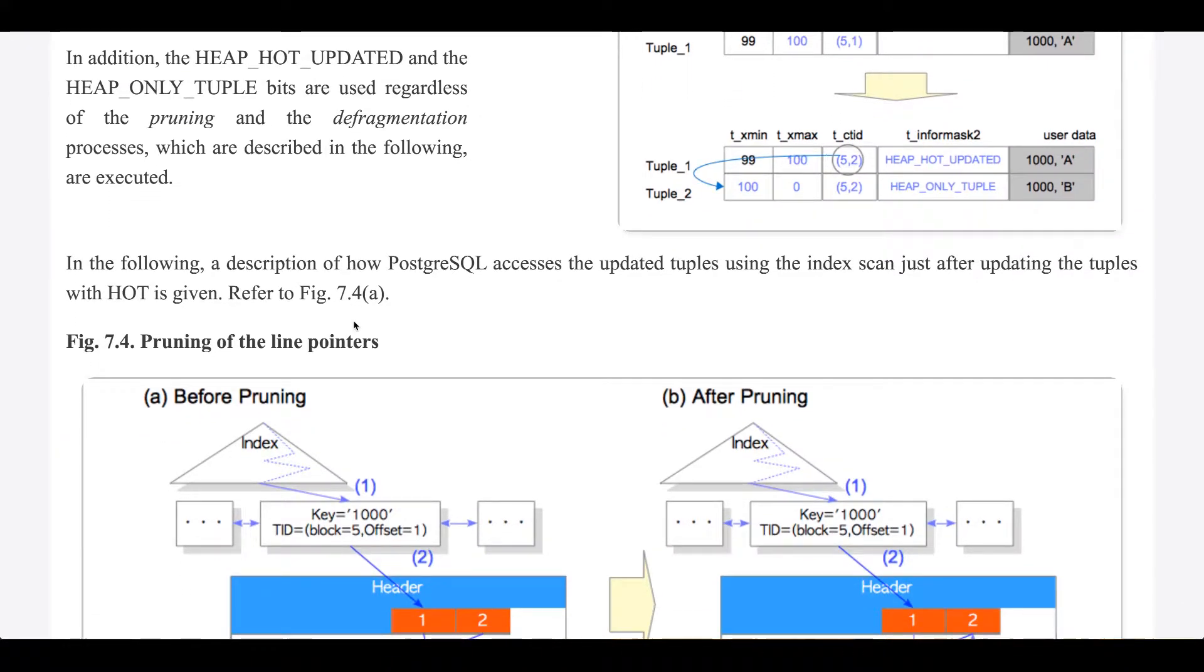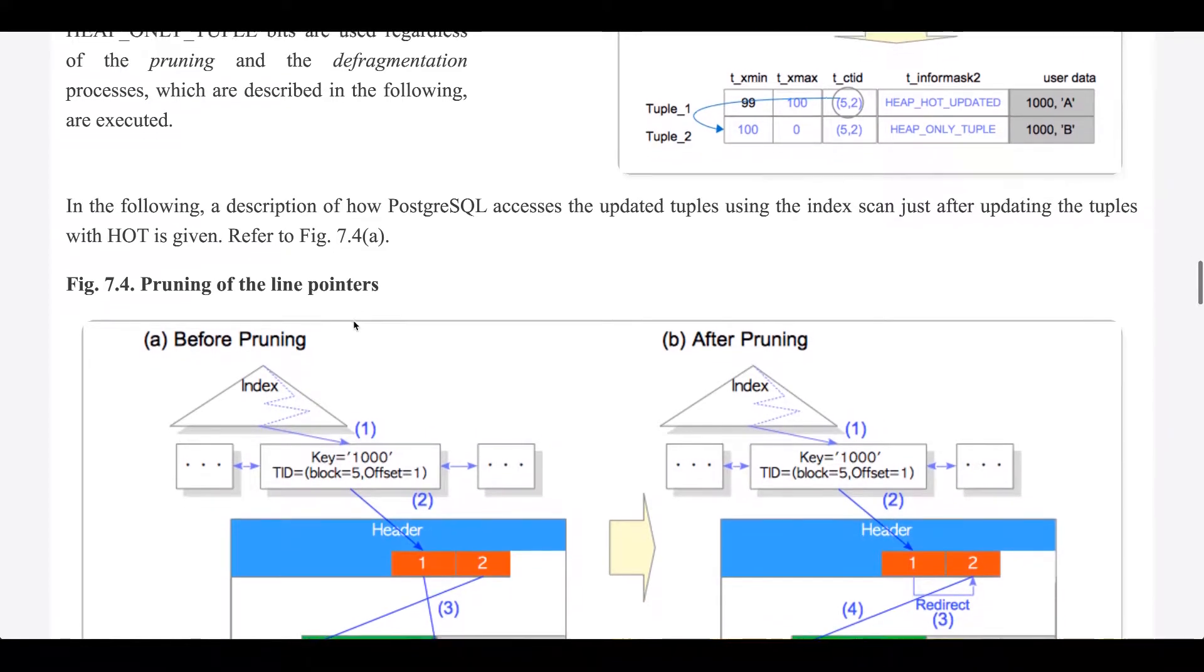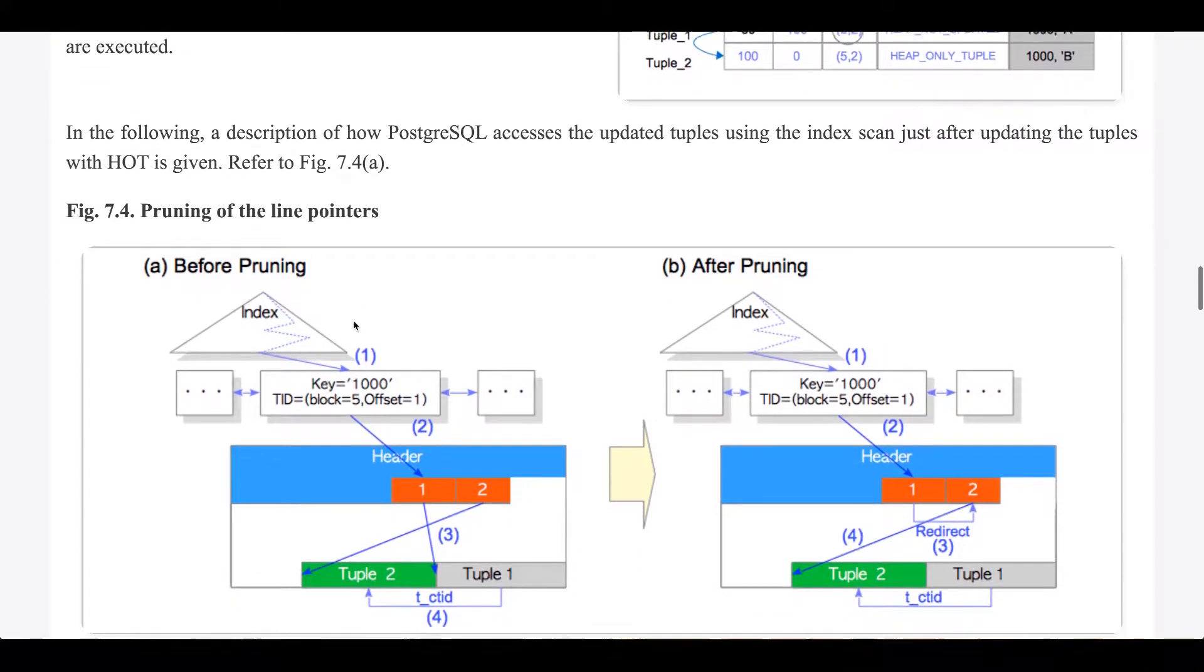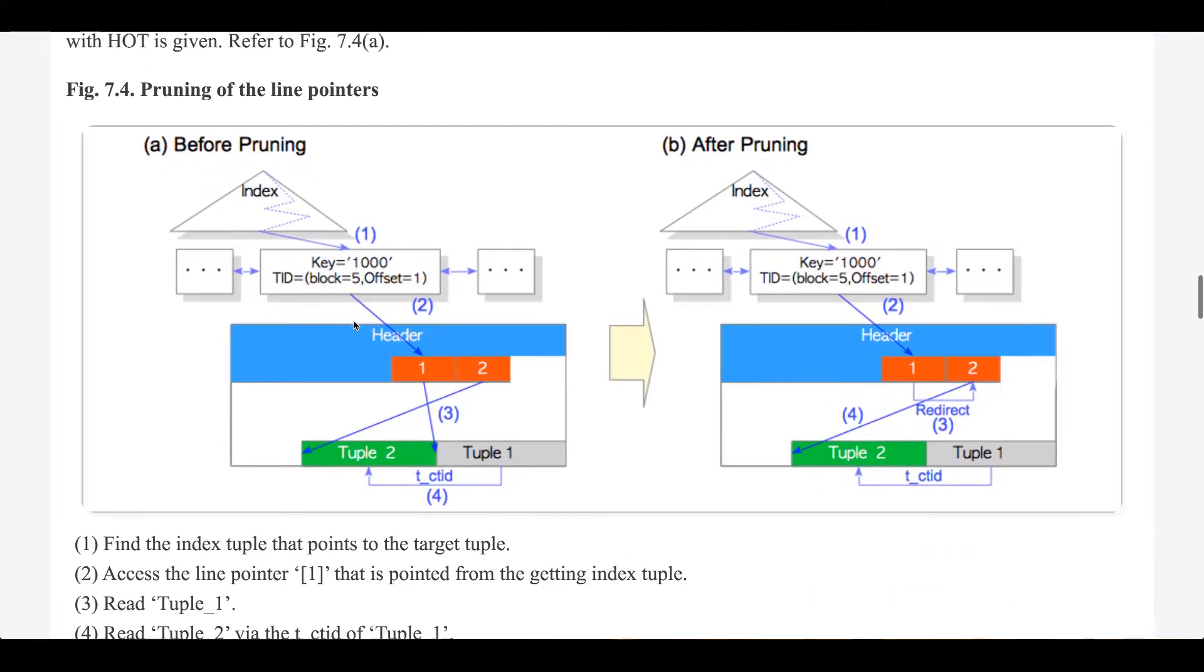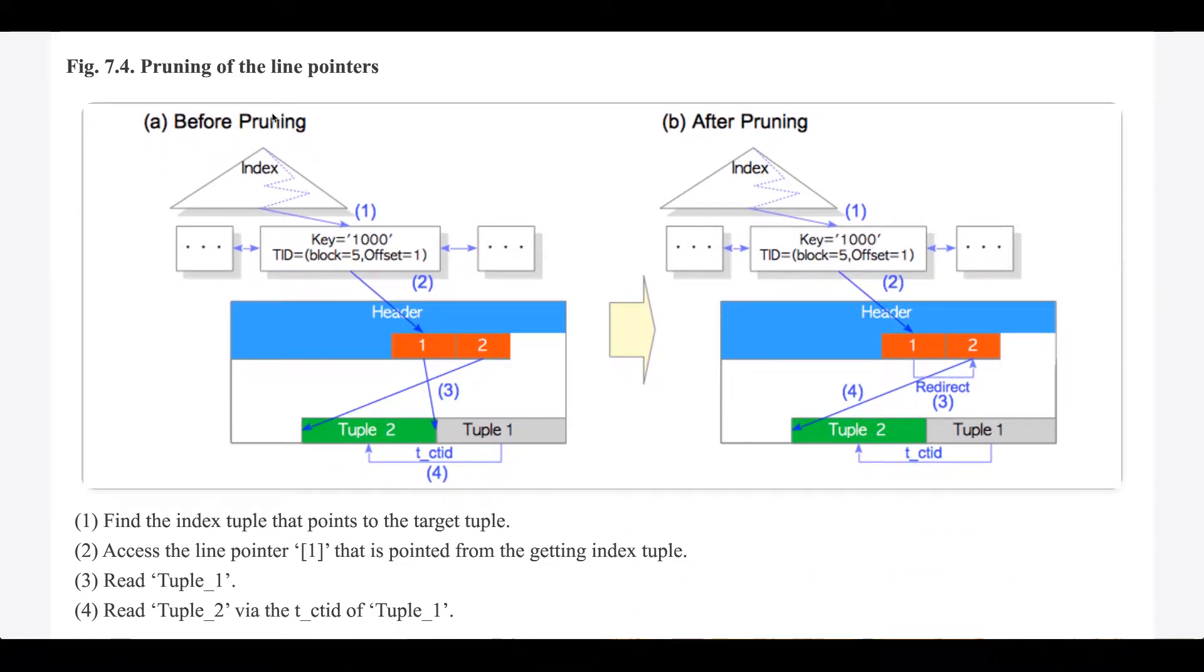In the following, a description of how Postgres accesses the updated tuples using the index scan just after updating tuples with HOT is given. In addition, pruning of the line pointers.